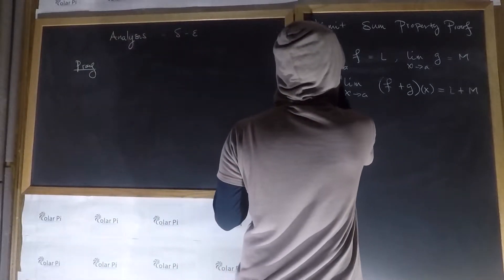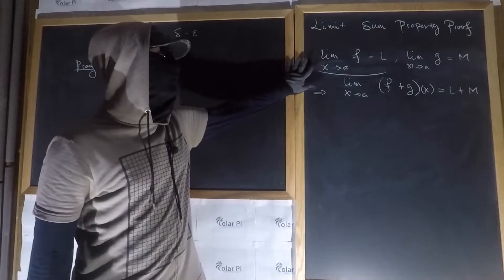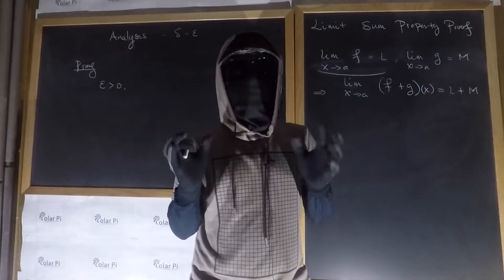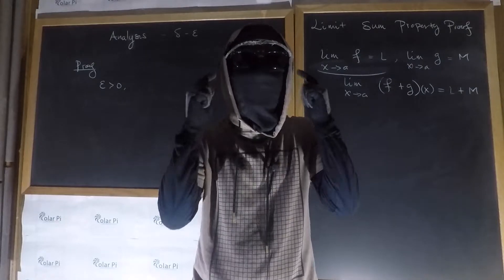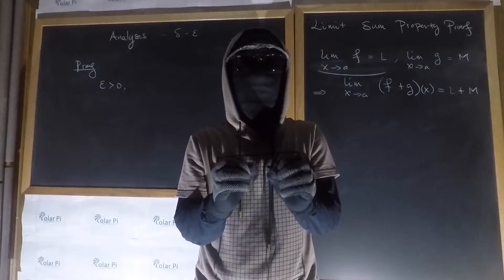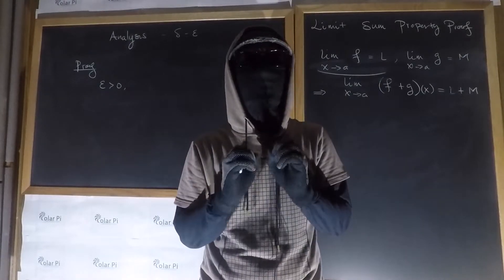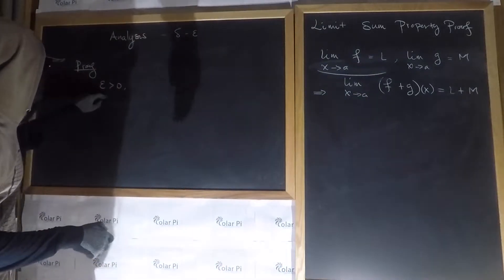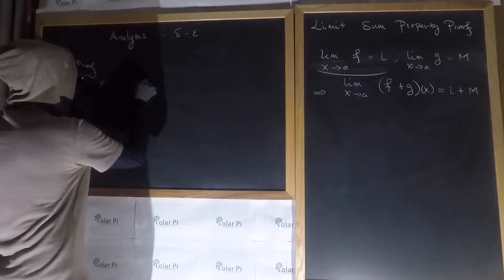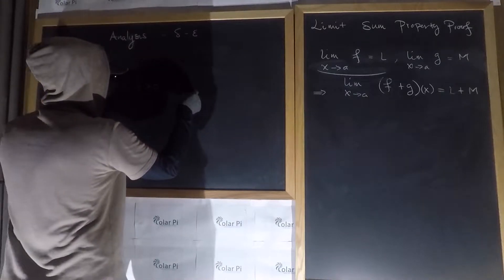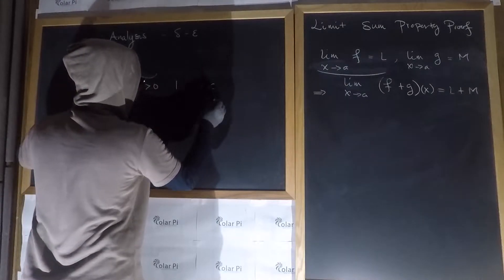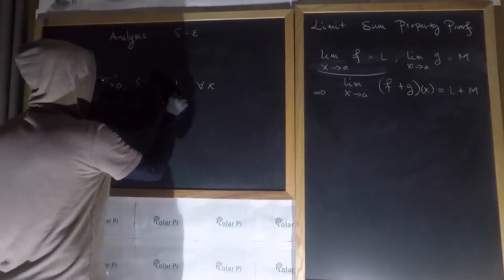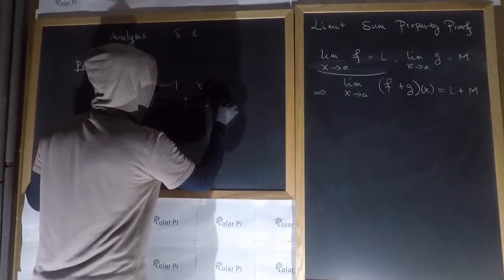According to the delta-epsilon limit definition, saying that the limit as x goes to a of f(x) equals L means that for every epsilon greater than zero — and from here on out, anytime I say epsilon, think of it as an arbitrarily small positive real number, as small as we'd like — you must find a corresponding delta greater than zero such that for all x, whenever |x - a| < δ, it immediately follows that |f(x) - L| < ε.